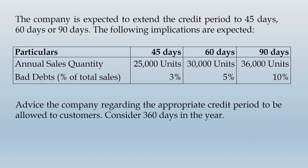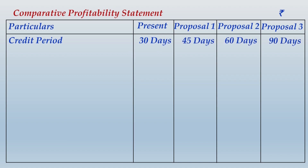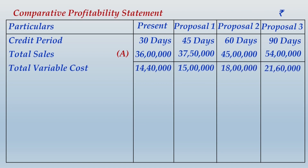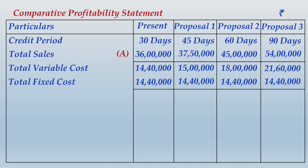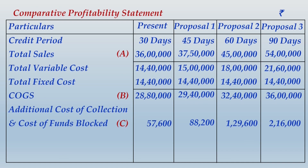You end up comparing the profitability of the four columns: the present policy and three proposals. In the solution, write the title as 'Comparative Profitability Statement' with four columns — present policy and the three proposals at credit periods of 30, 45, 60, and 90 days. Total variable cost changes with volume, but total fixed cost in the present column remains as it is. Then compute cost of goods sold, additional cost of collection, and cost of funds blocked.